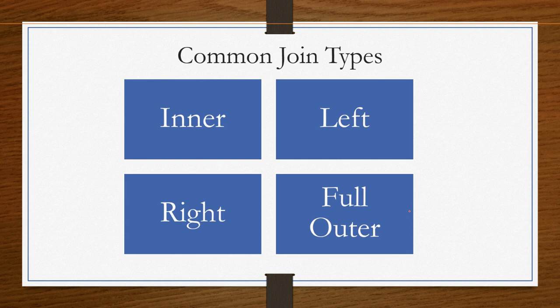In join, specifically in Tableau Prep Builder, you have four types: inner join, left join, right join, and full outer join.